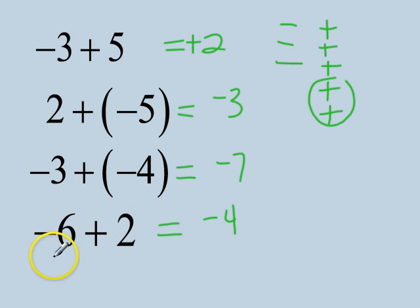On the last one, we had 6 negatives and 2 positives. So when we canceled out, we had more negatives left over, so our answer was a negative 4.